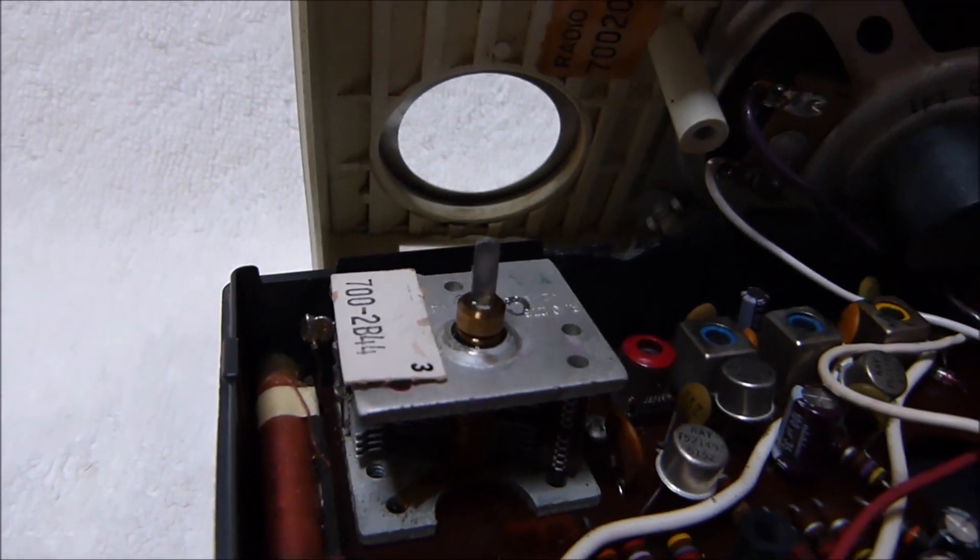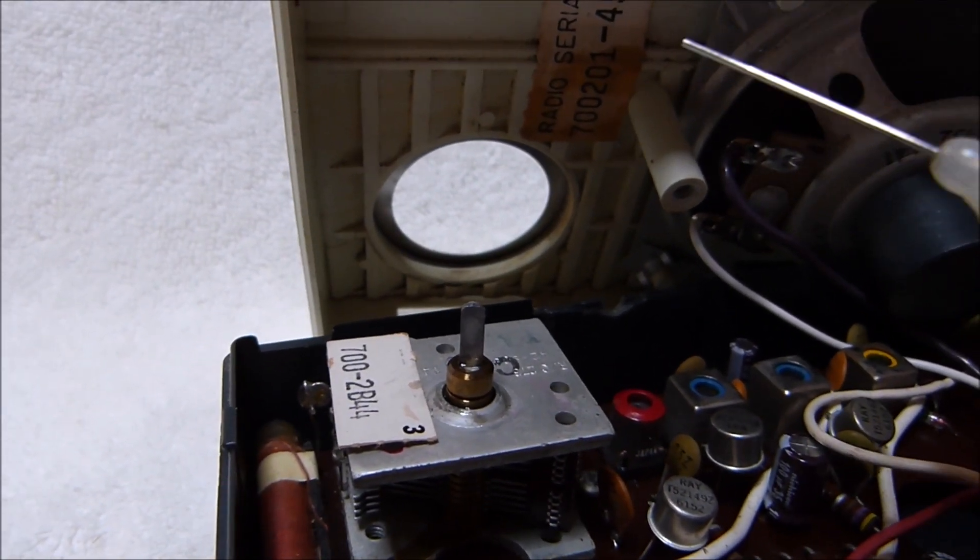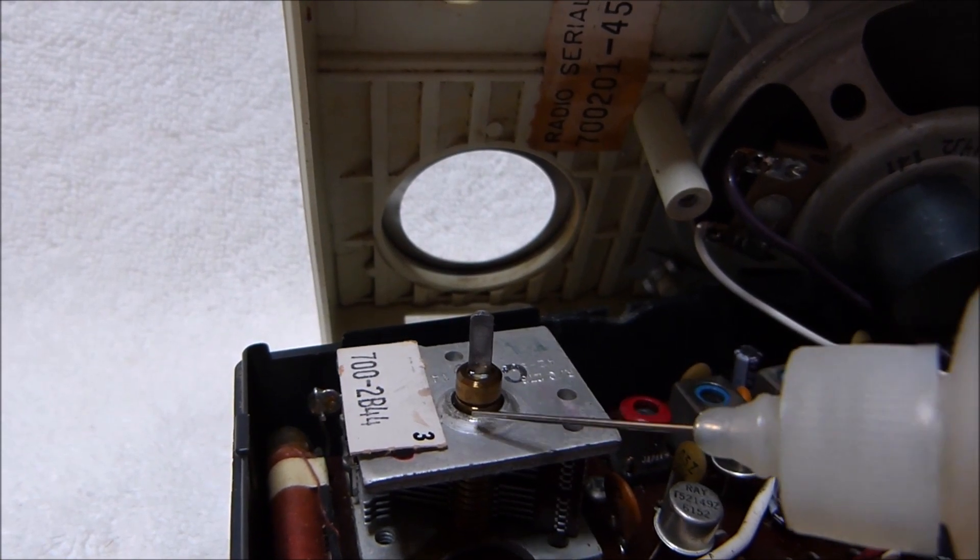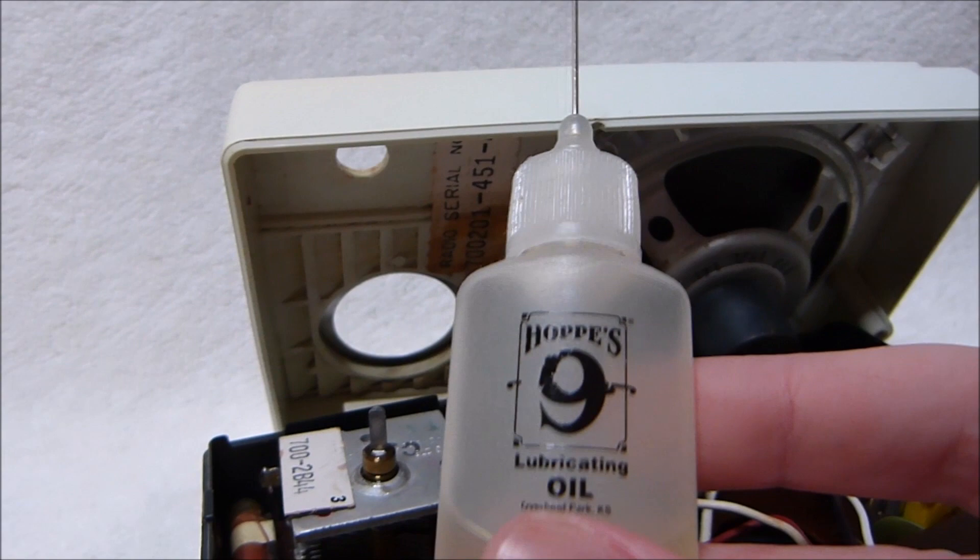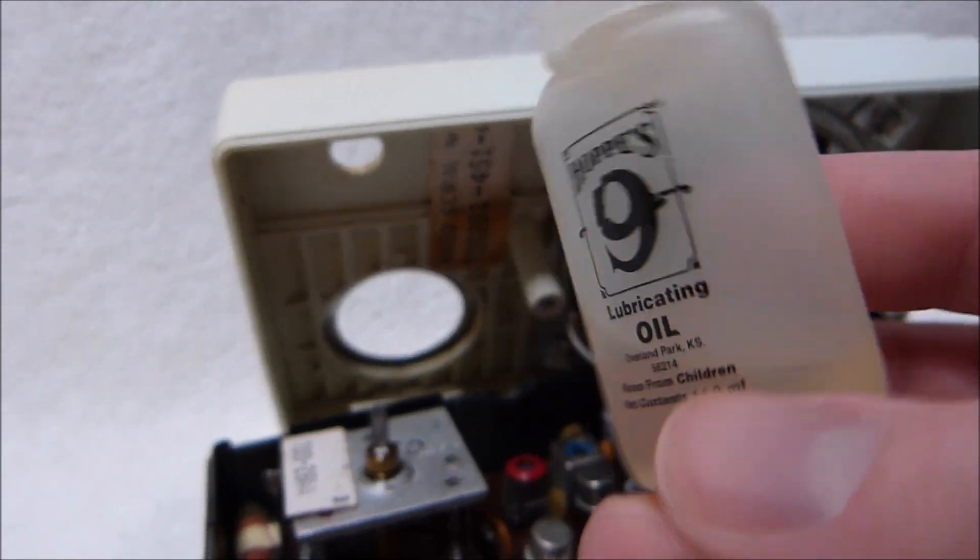Just in case any of you are wondering what I use to lubricate and also clean up old tuning capacitor bearings, I use Hopes No. 9 oil. It's intended as a gun oil, but it works very well for stuff like this.